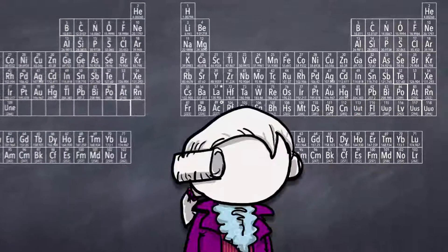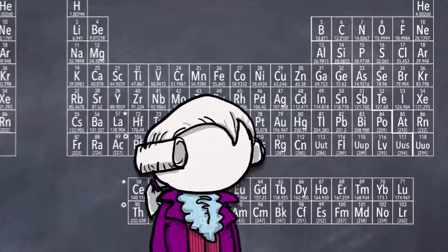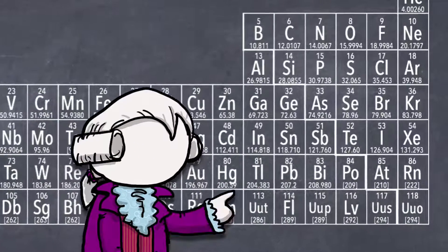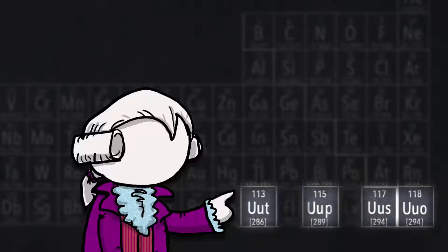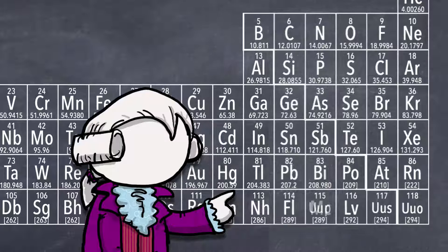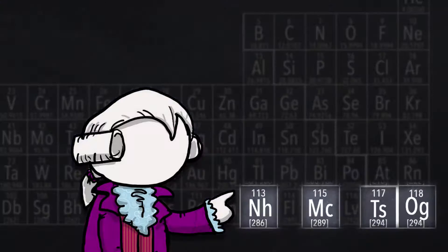And interestingly, the season one periodic table itself will probably be outdated by season two. What do I mean by that? The IUPAC is set to formally recognize four more elements by the end of 2016. So say hello to Nihonium, Moscovium, Tennessine, and Oganesson, respectively.